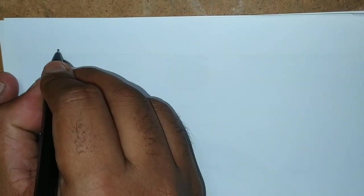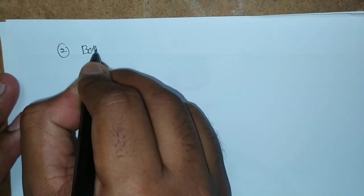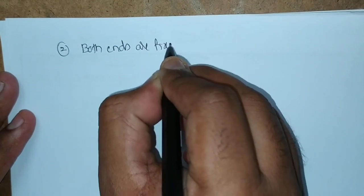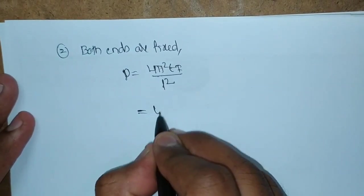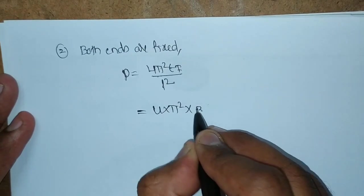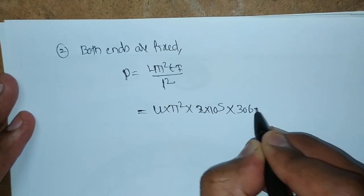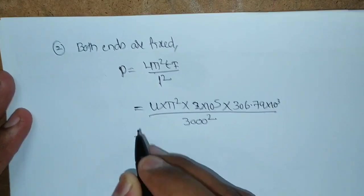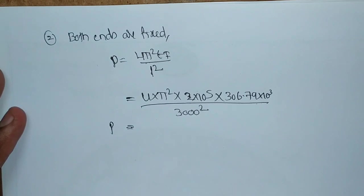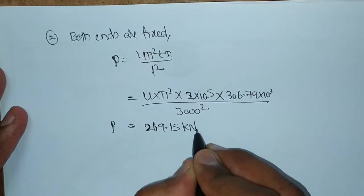Next we will find out for the second condition - both ends are fixed. If both ends are fixed, the crippling load formula is 4 Pi squared EI by L squared. Substituting: 4 Pi squared into E value 2 into 10 to the power of 5, and I value 306.79 into 10 to the power of 3, divided by L value 3000 squared. We will get the value of P as 269.15 kilo Newtons.